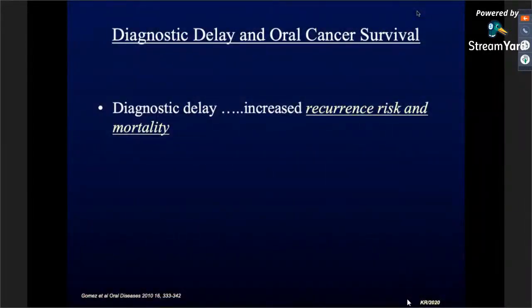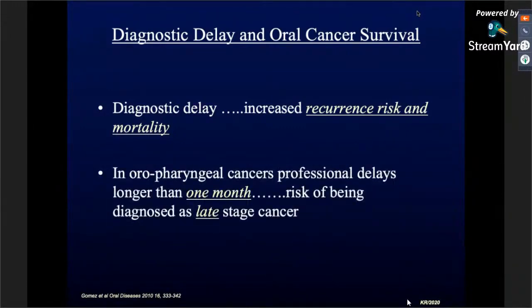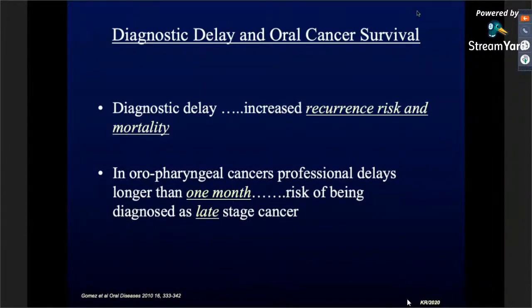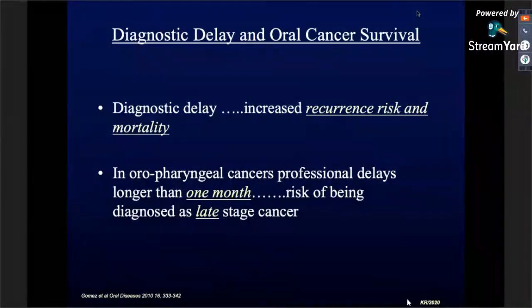Why exactly do you need to catch them early? A diagnostic delay means increased risk of recurrence and increased morbidity and mortality as far as oral cancer is concerned. In oropharyngeal cancer, a professional delay of just one month could mean the difference between stage one cancer — where the prognosis is very good, almost 90 to 95 percent recovery rate — and stage four, where prognosis is very dismal with months of survival less than 5 percent. A delay of one month would make a very big difference to the patient and the prognosis.